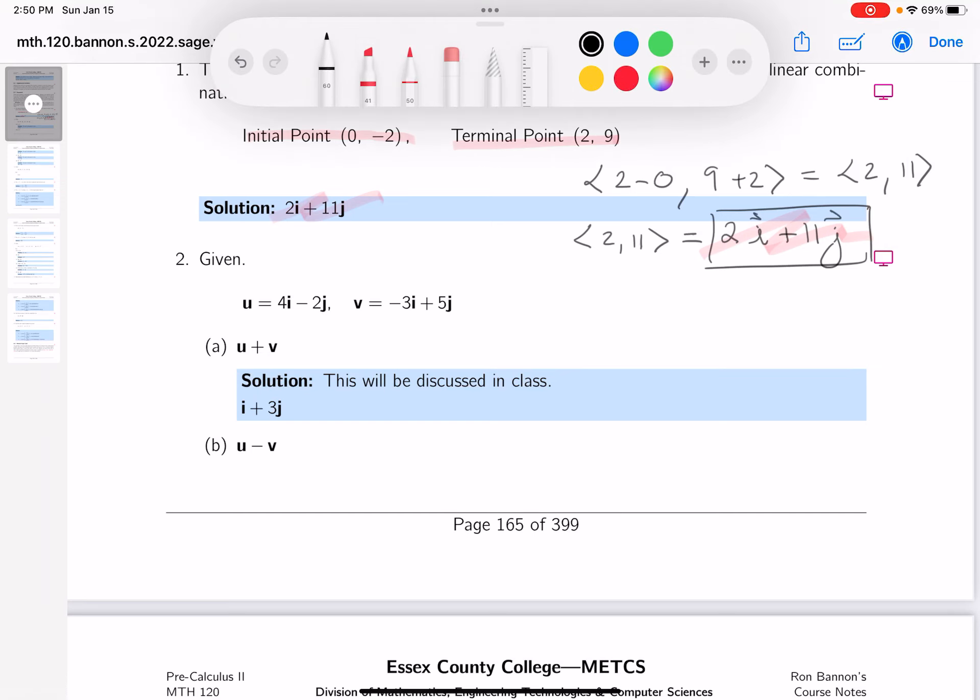We're given two vectors. Vector u, which I'll write in the notation I like to use, is 4, -2. And vector v is -3, 5.